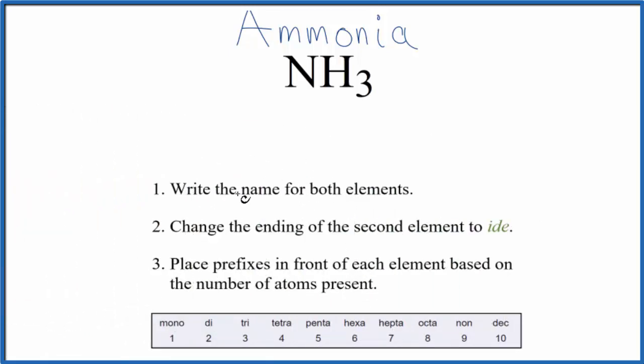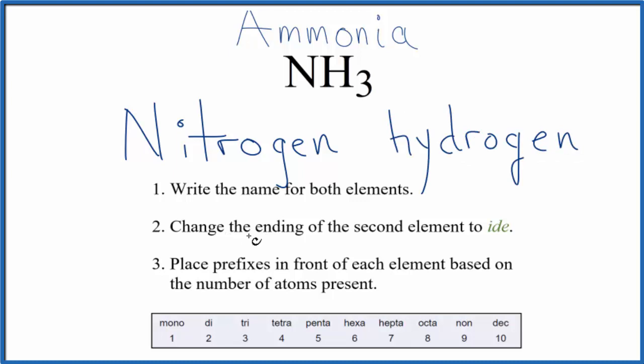First, we write the name for both elements: we have nitrogen and then hydrogen. We take the second element and change the ending to -ide, so we'll cross this out